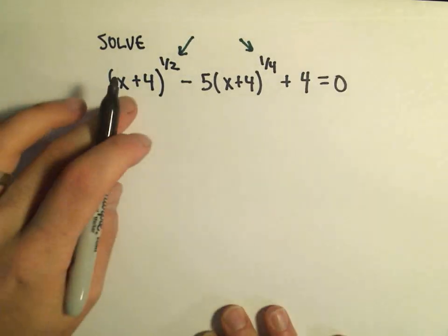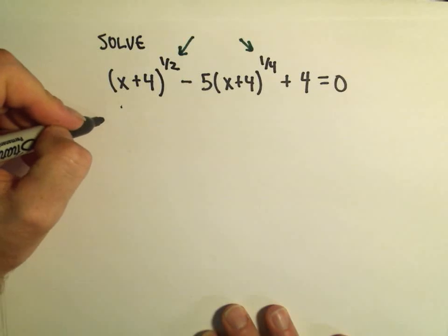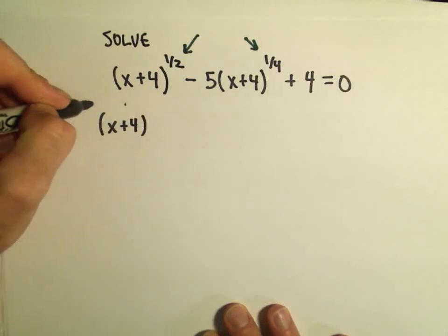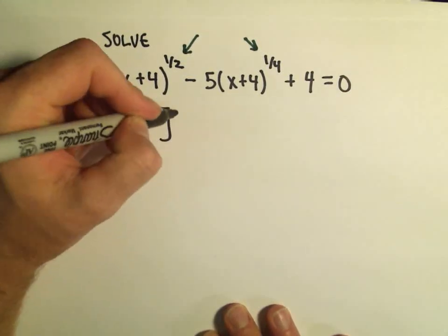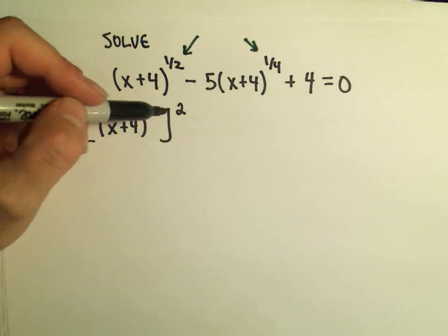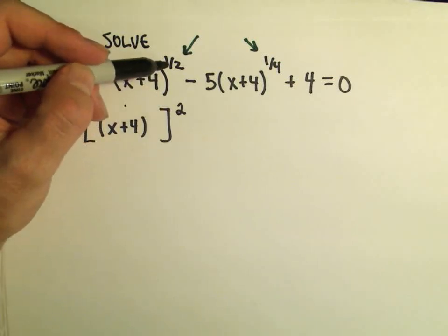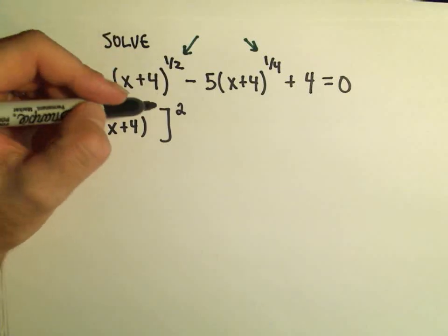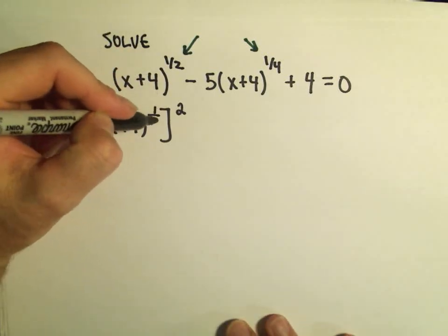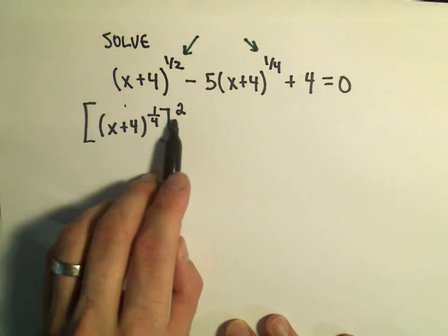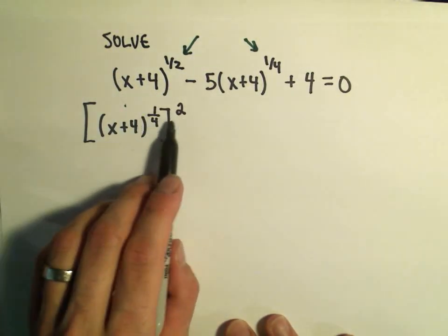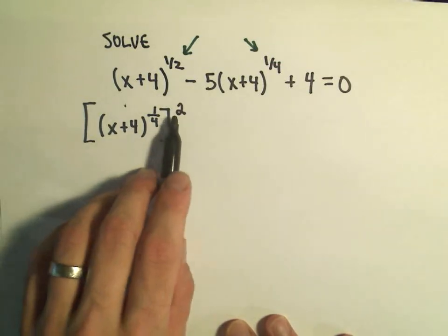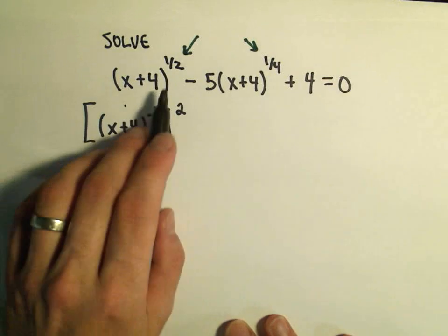Okay, the first thing I'm going to do is I want to rewrite this x plus four. I want to rewrite this as something squared. Well, I think, so what number times two is going to give me one-half? Well, if you take two times a fourth, notice if you multiply, we would have two over one times one-fourth. Two over four is going to give us one-half, so the way I've rewritten this is equivalent to the x plus four to the one-half.